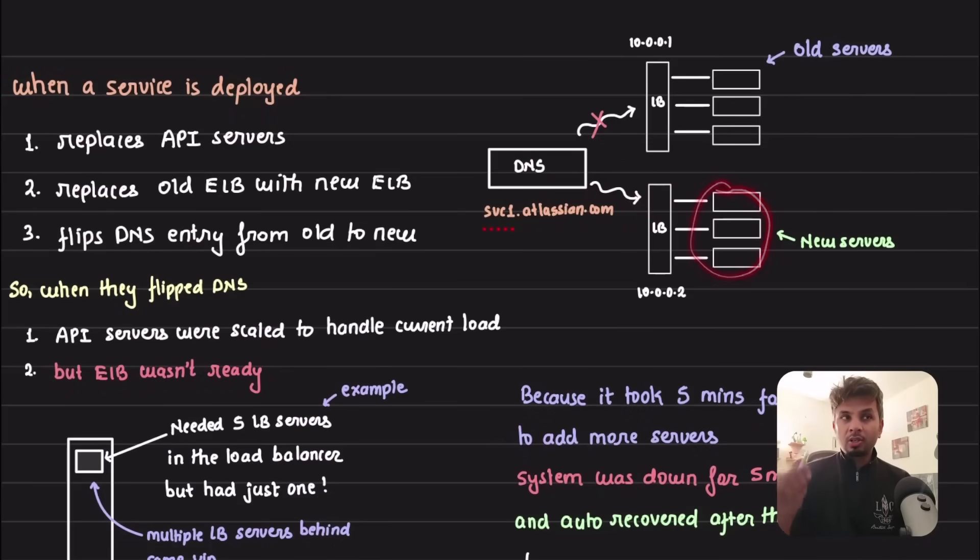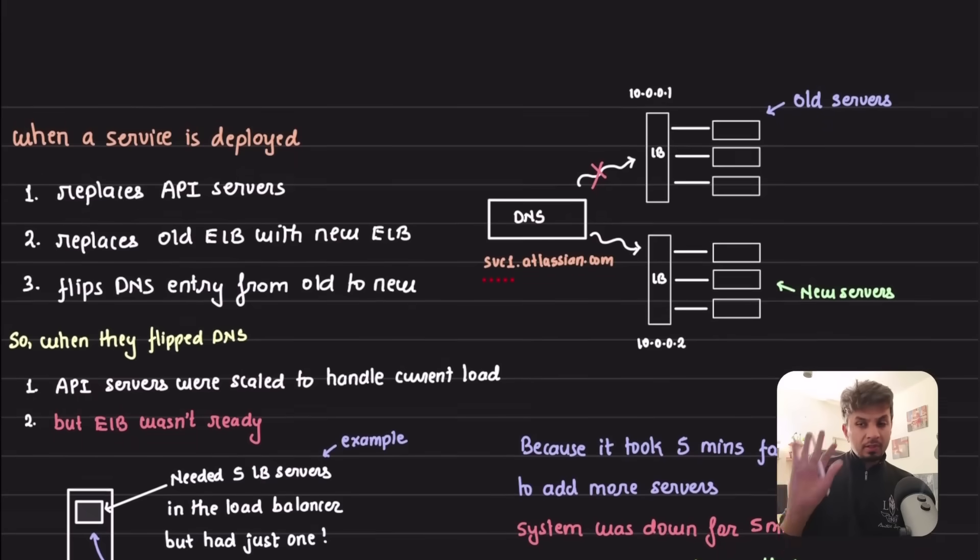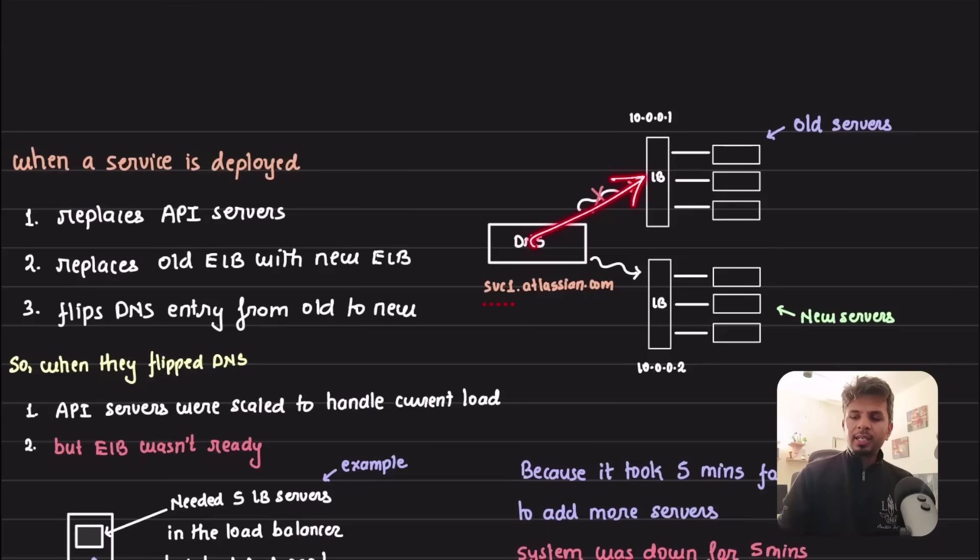When they flipped the DNS entry, the requests started coming to the new load balancer. But what exactly happened is when they flipped the DNS from old infra to new infra, the ELB was not ready. It was functioning, it could serve small number of requests, but it wasn't as scaled as it was supposed to be. For example, if the old ELB was handling 100,000 requests per second, it needs 10 LB servers internally, each handling 10,000 requests per second. When a new load balancer spun up, AWS would not start with 10 LB servers, it might start with one or two.